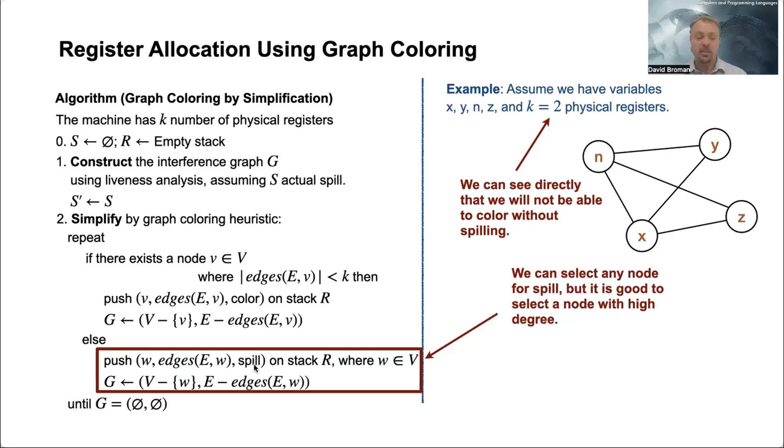And after that, we remove the element from the graph in the same way. So this is the same procedure. Sometimes we will spill it, and sometimes we will color it. But the tagging makes the difference.